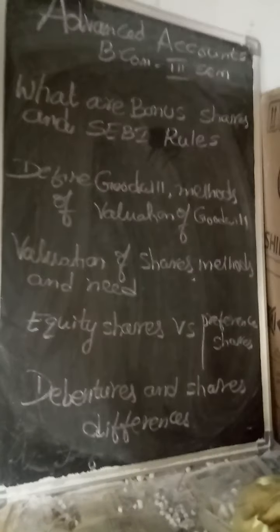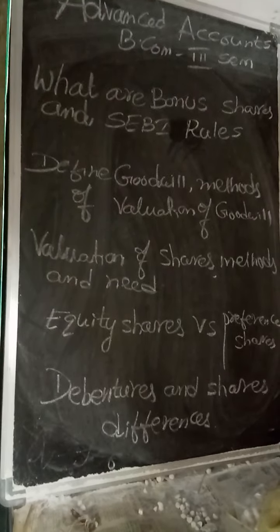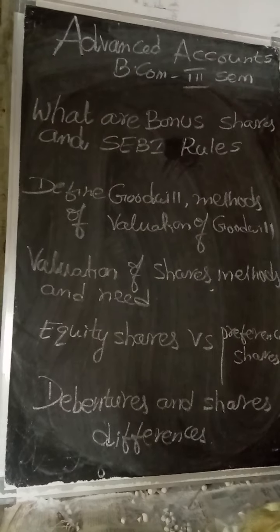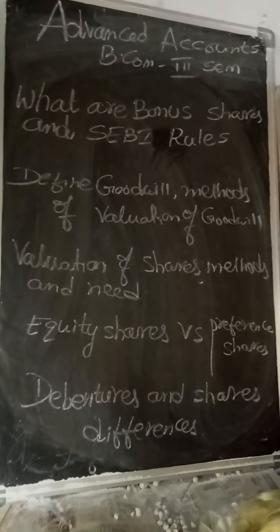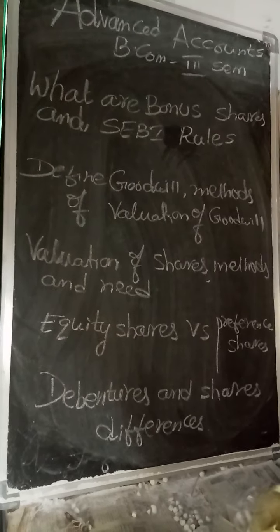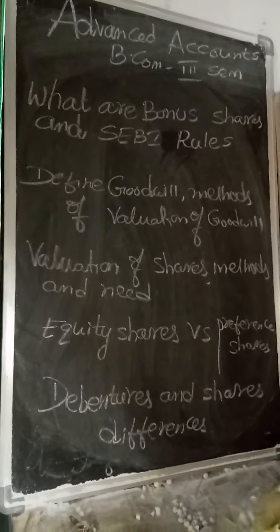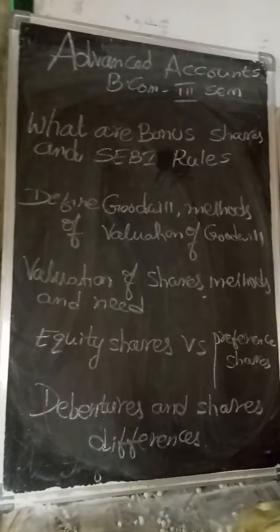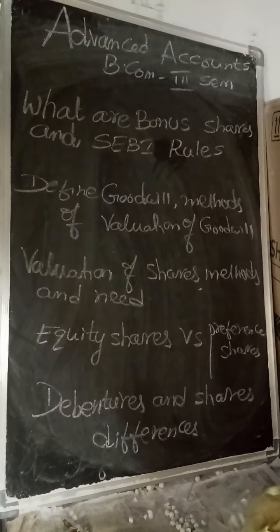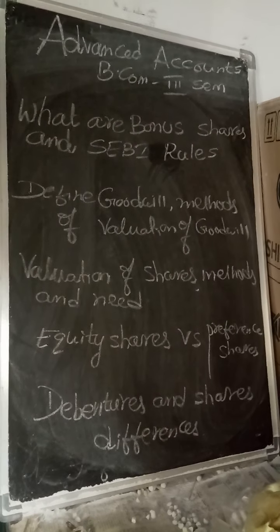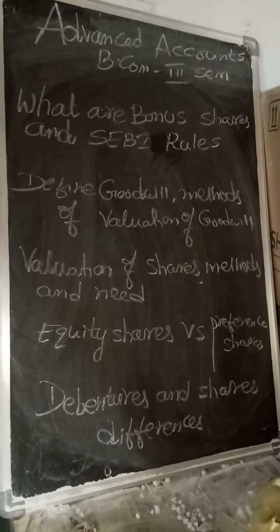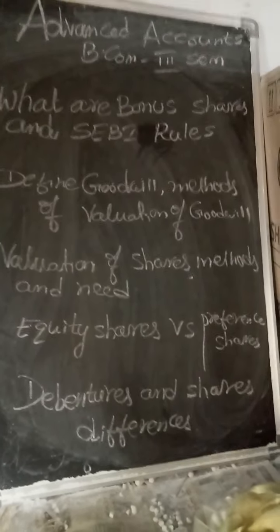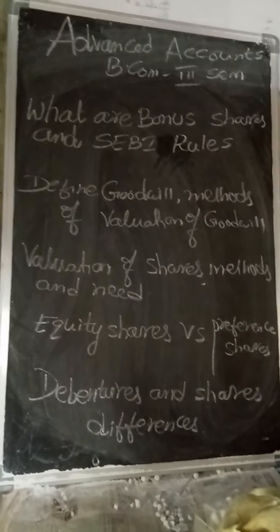There is a chance of getting a question on goodwill valuation and methods of valuation of goodwill. Goodwill is an intangible asset, which is not a fictitious asset — it is a fixed asset and will appear in the asset side of the balance sheet. There are some situations where we need to value goodwill: at the time of admission of a partner, retirement or death of a partner, or when one business is purchasing another business.